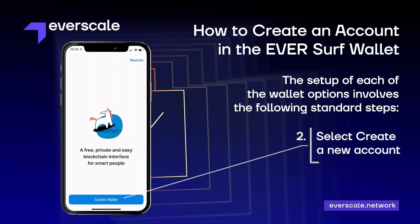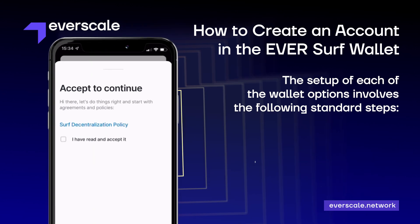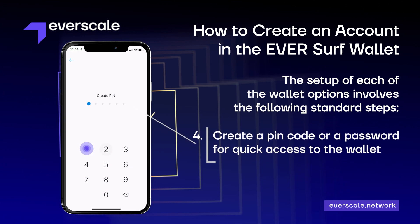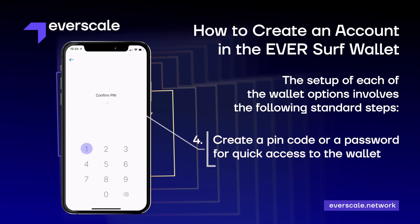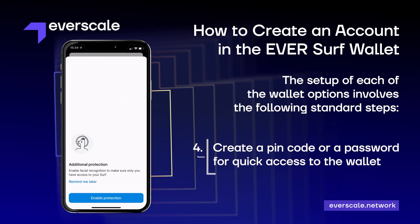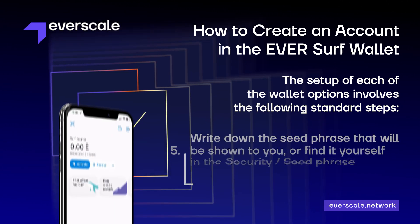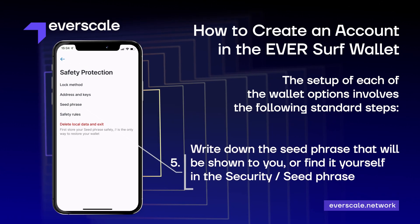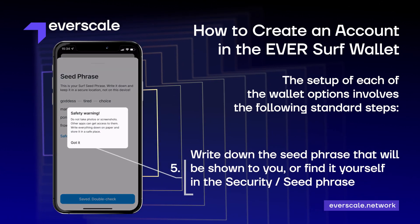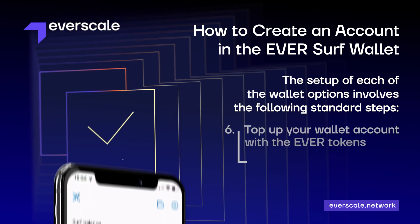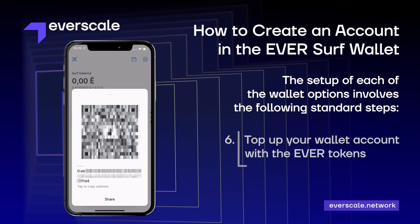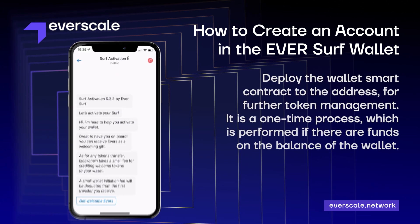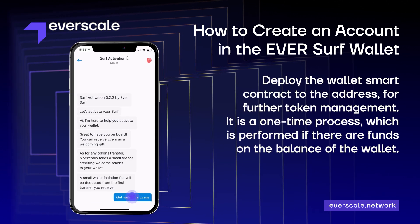Select 'Create new account.' Read the decentralization policy and accept it. Create a pin code or password for quick access to the wallet. Write down the seed phrase that's shown to you, or find it yourself in the security seed phrase options. Top up your wallet account with Evers, then activate the wallet.